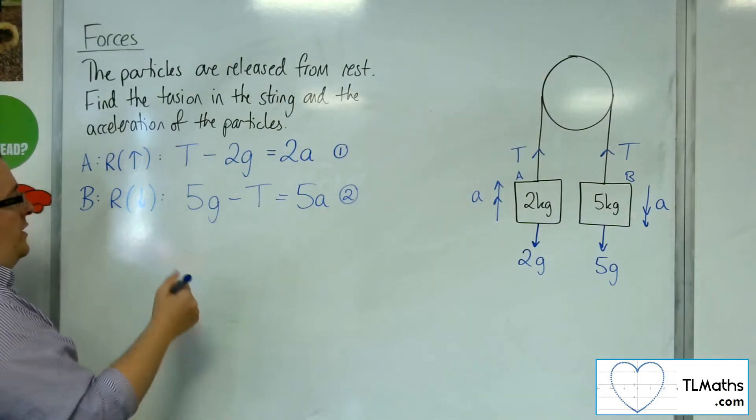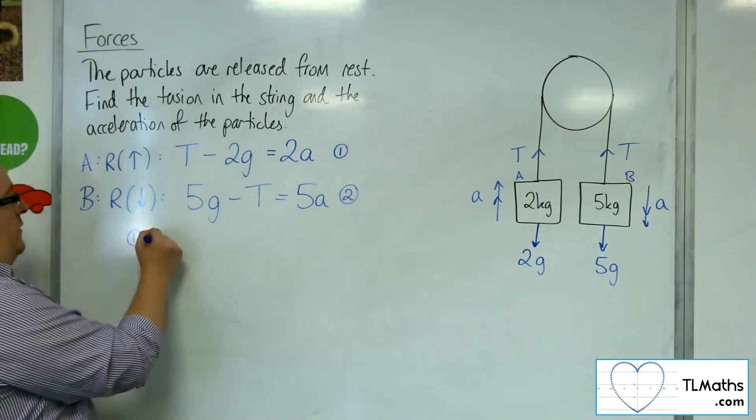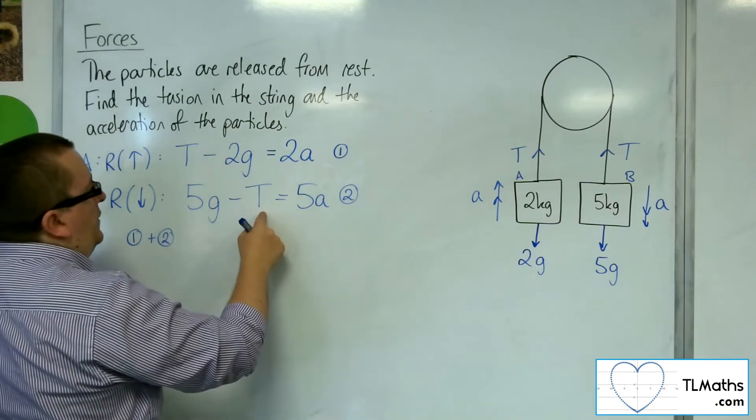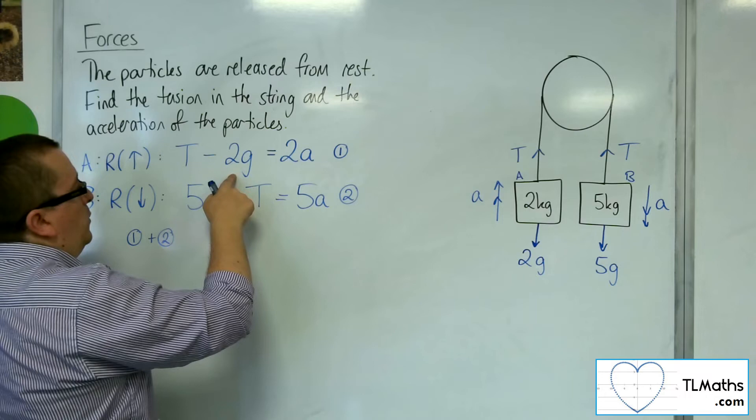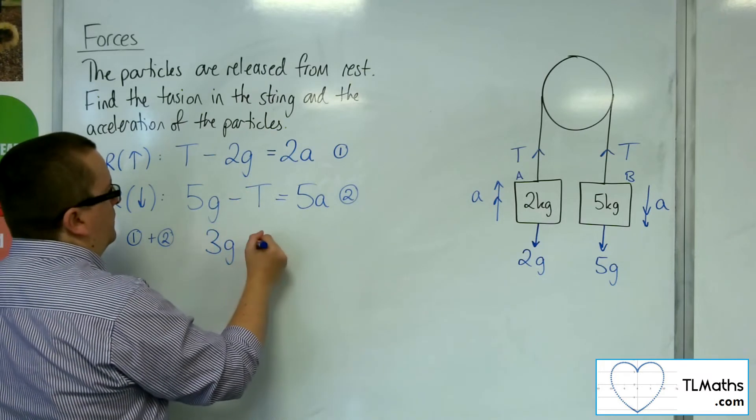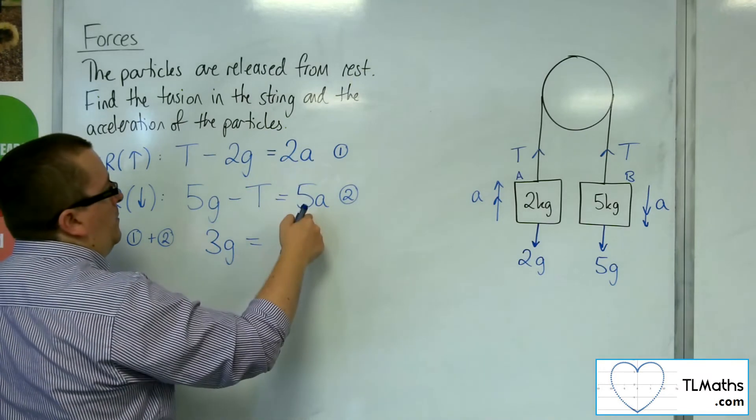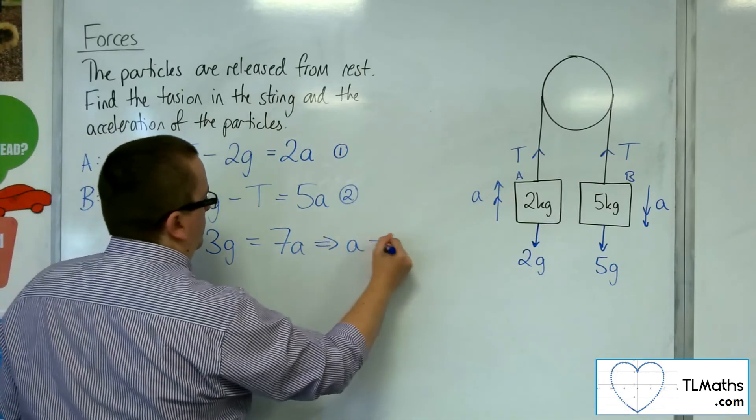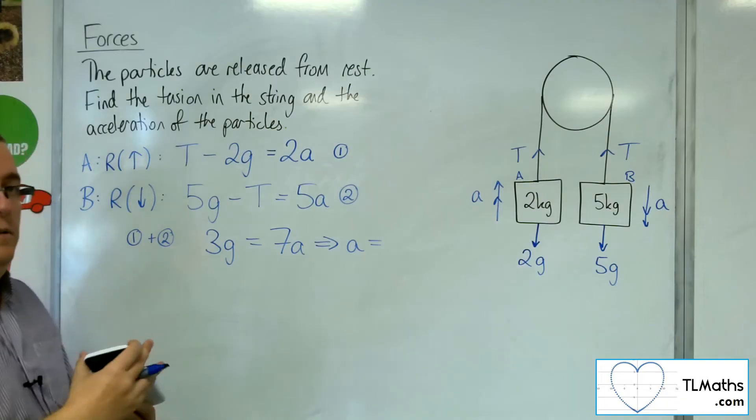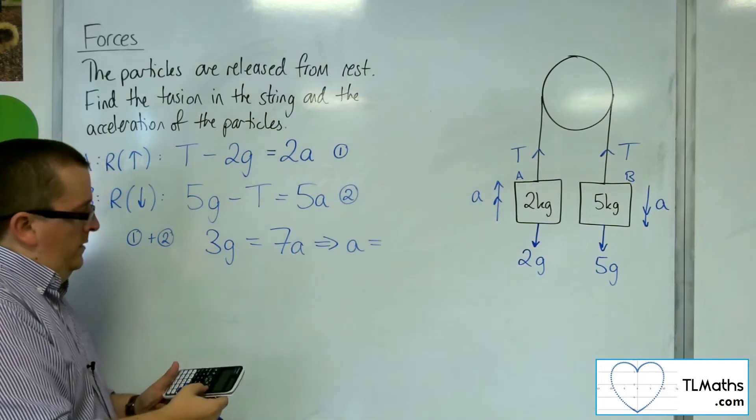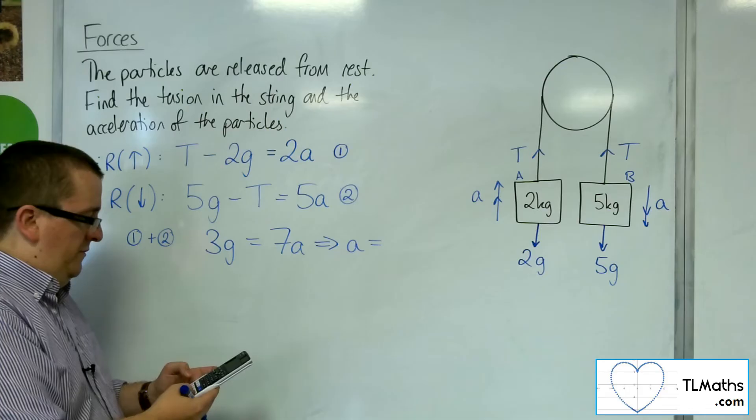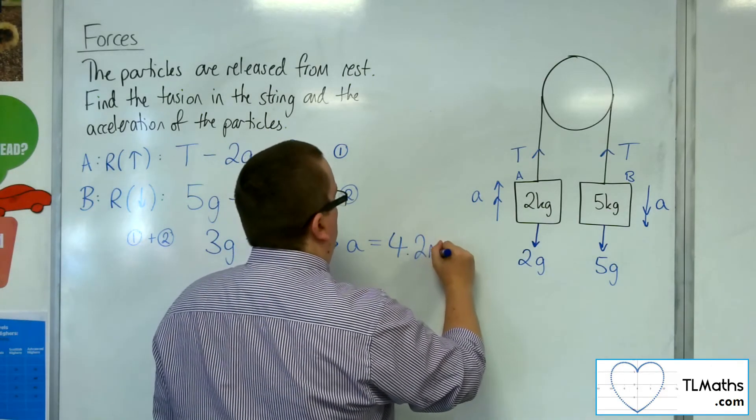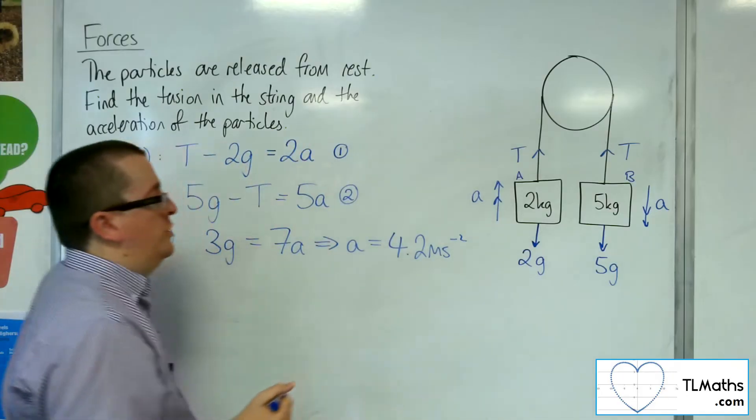So now what I can do is I can add equation number 1 and 2 together, and that will knock out the T's. I've got 5g take away 2g, so that leaves me with 3g. And I've got 2a plus 5a, so 7a. So if I take g as 9.8, then I've got 3 lots of 9.8 divided by 7, and that gets me 4.2. So that is the acceleration of the system.